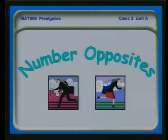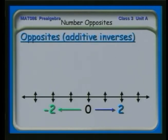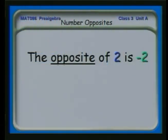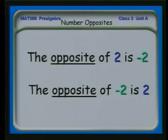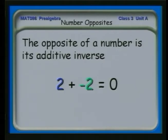Let's look at a definition of number opposites. We have two and minus two on the number line. Two numbers that are the same distance from zero but in opposite directions are called opposites — they're also called additive inverses. So the opposite of two is minus two, and the opposite of minus two is plus two.